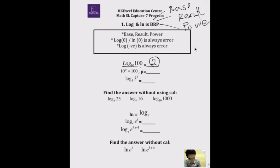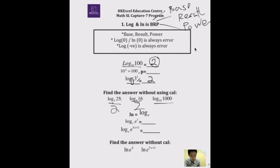Let's look at one more case: log base 3 of 3 squared. You need to calculate the power. Think: 3 to the power of what equals 3 squared? Obviously it's 2. Now log base 5 of 25 — think: 5 to the power of what equals 25? Obviously 2. Log base 4 of 16 — 4 to the power 2 equals 16, so the answer is 2.